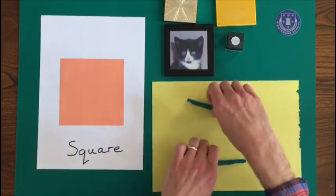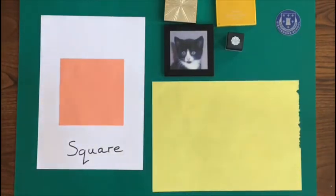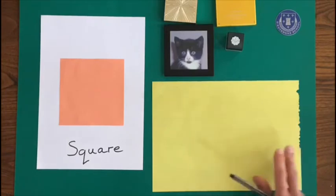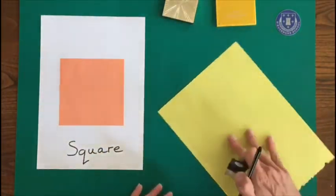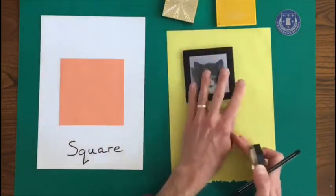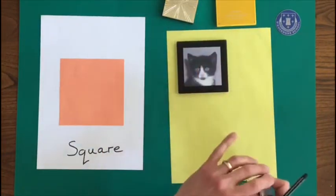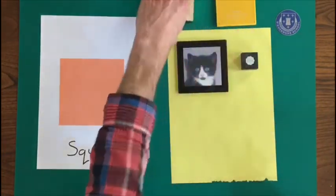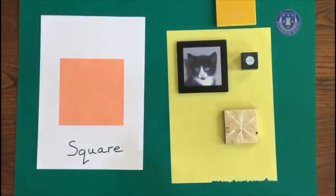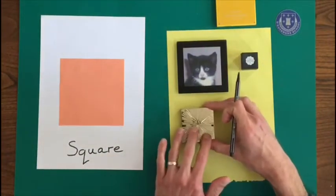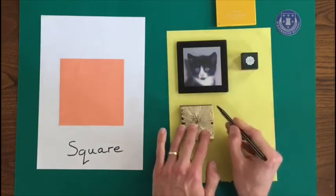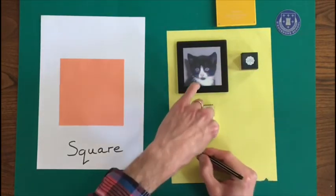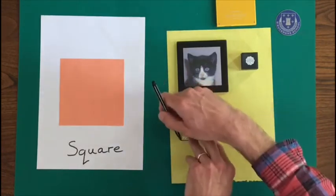So today I thought of a little activity to do. I'm going to draw around the objects I've found. Then I will cut them out and I'm going to make a picture from the square shapes. So I'll just draw around these. One, two, three, four.